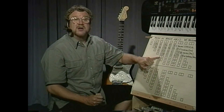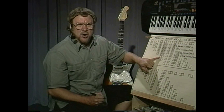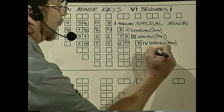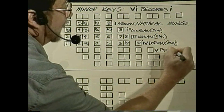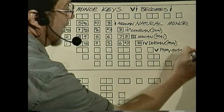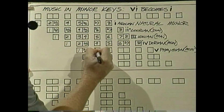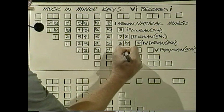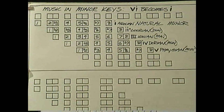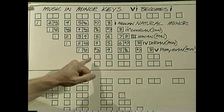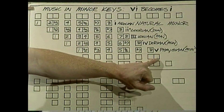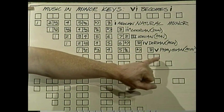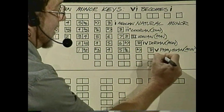So the five mode is Phrygian, which is also a minor scale — it's got a flatted third in it: one, flat two, flat three, four, five, flat six, flat seven, eight. So the five chord in a minor key chord progression is most likely going to be a minor chord. The sixth mode of a minor key chord progression is going to be the old four mode, which is Lydian — which is major. So the six chord in a piece of minor diatonic music is most likely going to be a major chord: one, two, three, sharp four, five, six, seven, eight.